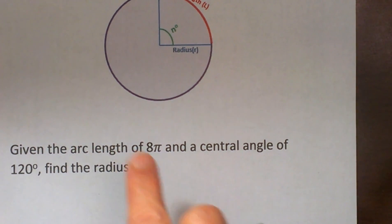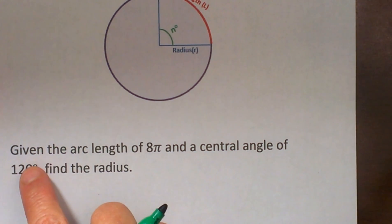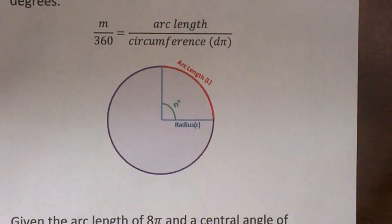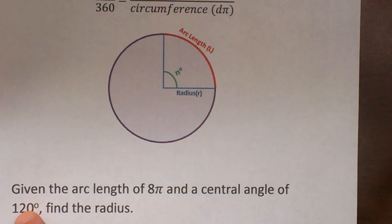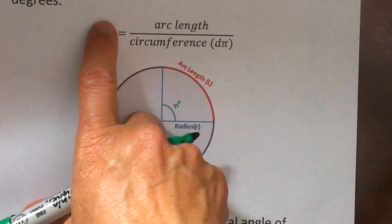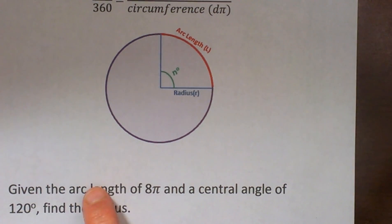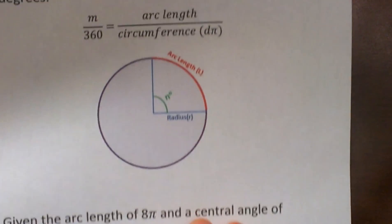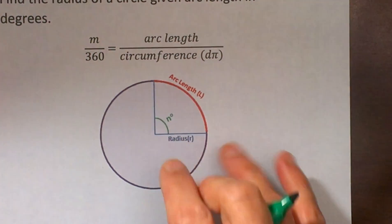Given the arc length of 8π and a central angle of 120 degrees, find the radius. Let's just plug it into our formula. We have 120 degrees so that is going to be our measure and then our arc length is 8π and we are going to solve for the circumference.